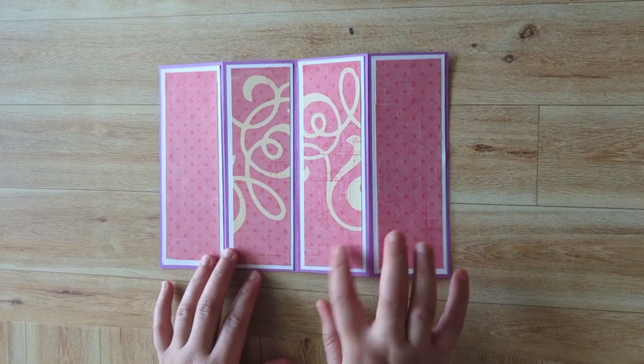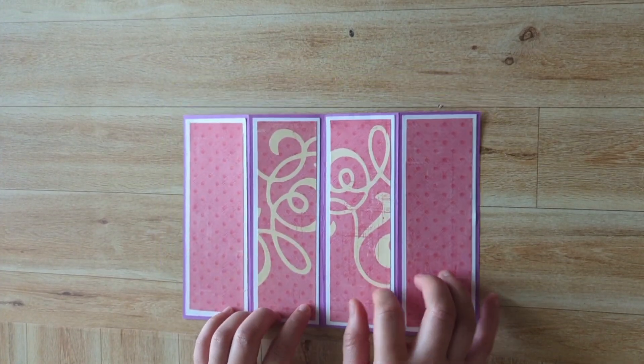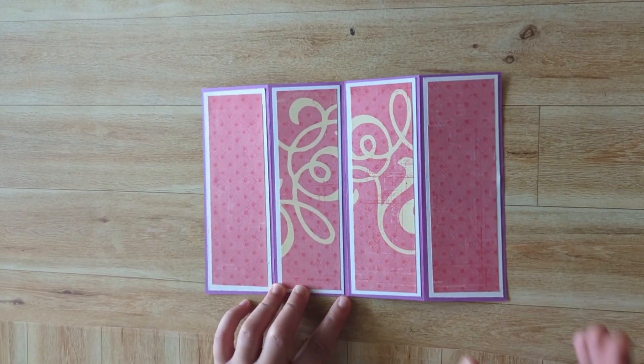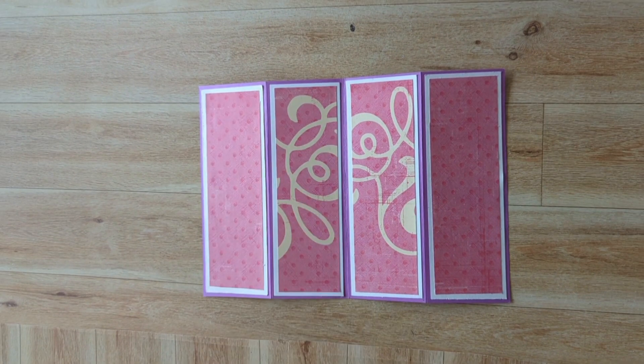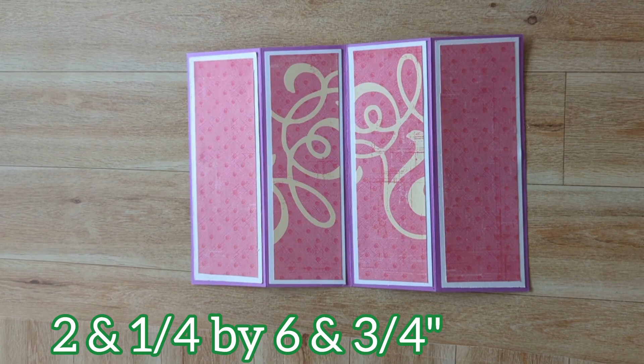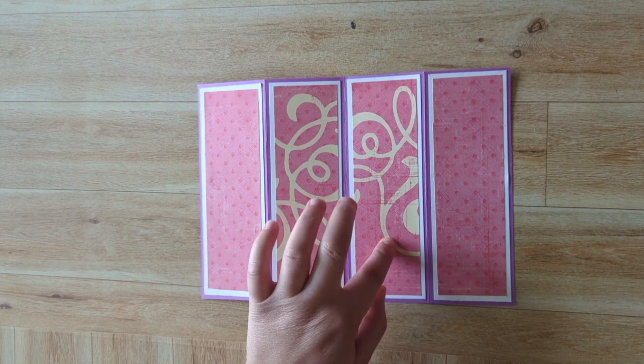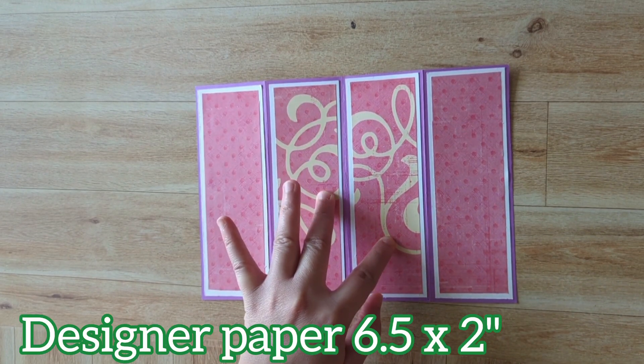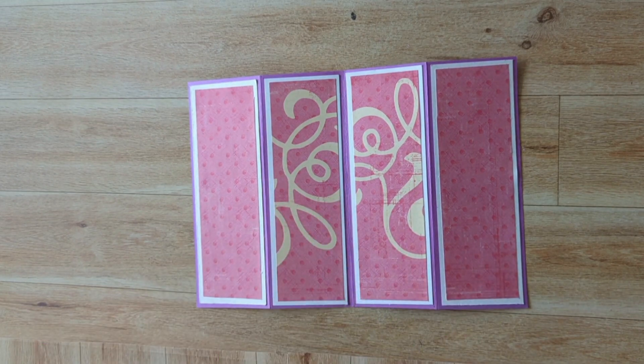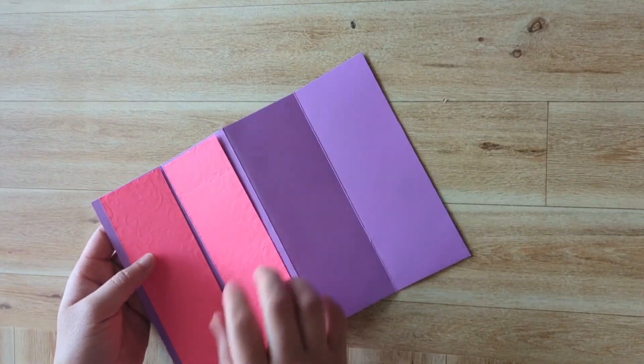So guys, I forgot to let you know the size of these papers that I am using. The white cardstock measures 2 and 1/4 by 6 and 3/4, and the designer paper which is on top in the pink measures 6 and a half by 2. I have these two to go at the front when I'm done, but I will leave that for later.